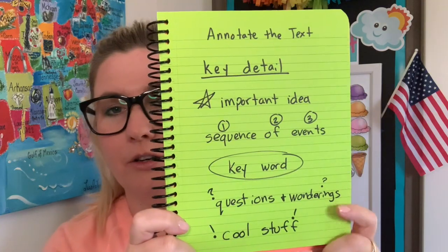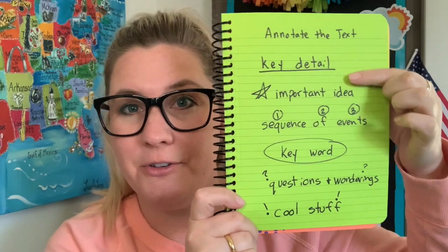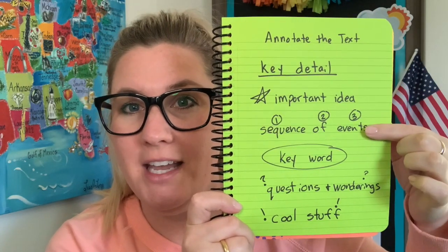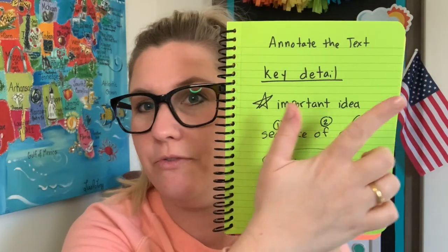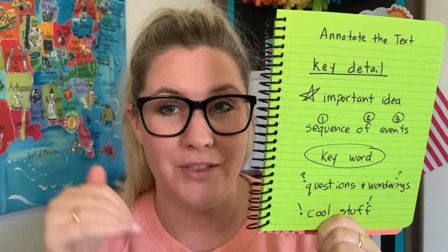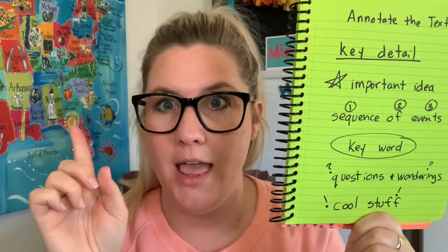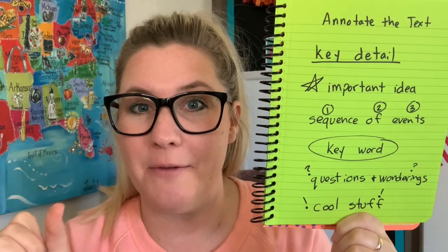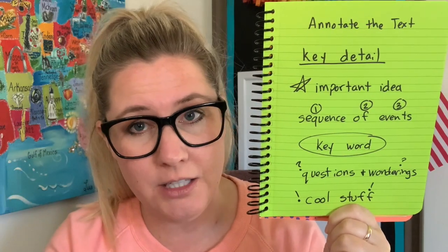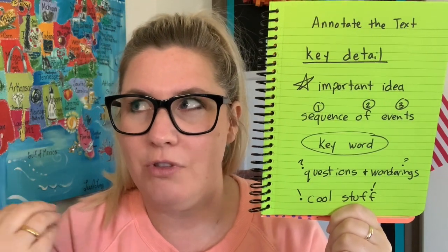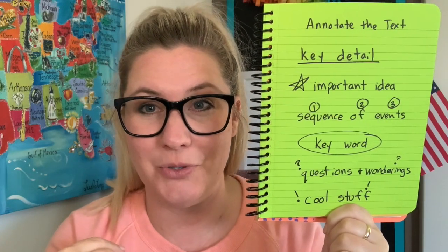So here are your annotation notes. If there's a key detail, underline it. If there's an important idea, put a star by it. If you want to put things in order — like if there's a sequence — you can put 1, 2, 3, 4 so you know where the steps are when you go back and read. You can circle key words that you want to remember. If you have questions about things — like you don't know what a word means or a paragraph didn't make sense — put question marks near them and you can go back and answer those questions later.